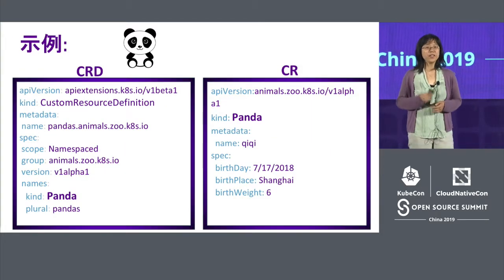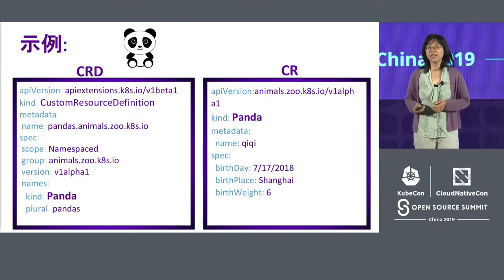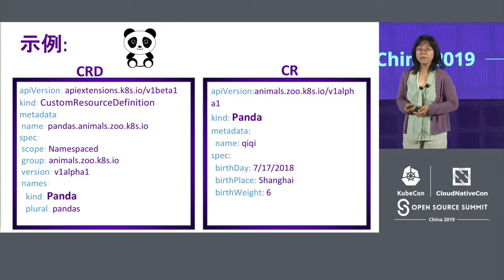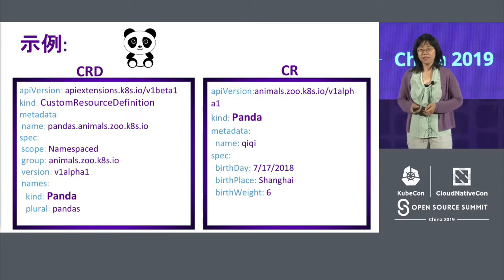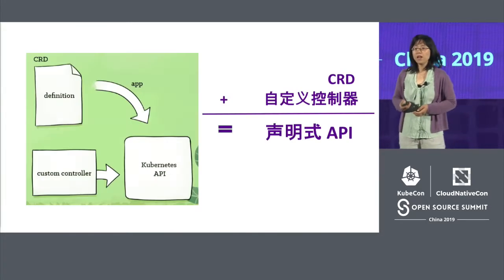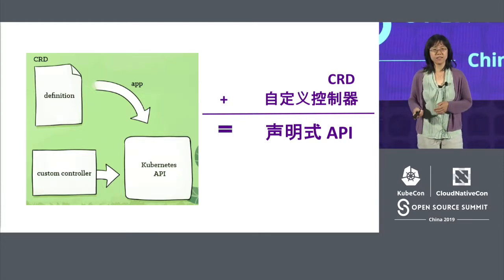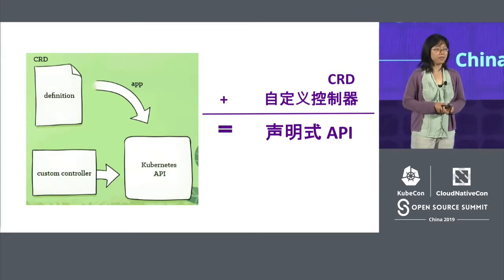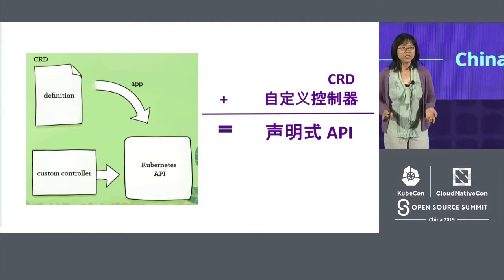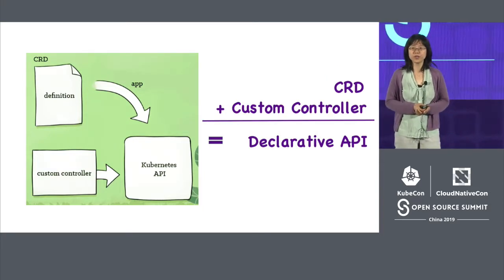Let's take a look at an example with a cute panda. On the left side, the CRD tells you we're going to define a new kind called panda and add it into the animals group. On the right side, the CR defines the detailed spec of this new resource — panda. You can give it a name and define the spec, like birth date, place, and weight. With CRD, you can add the custom resource into the API and use it just like any other Kubernetes API. But it doesn't do anything until you add a custom controller to manage it. With CRD and a custom controller, you get a declarative API — the API spec defines the desired state, and the controller moves the actual state towards the desired state.